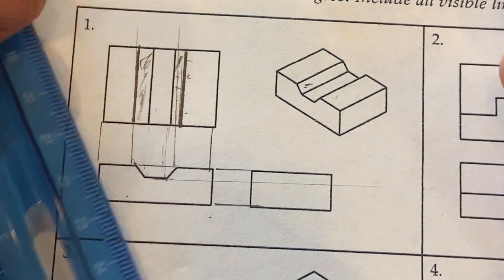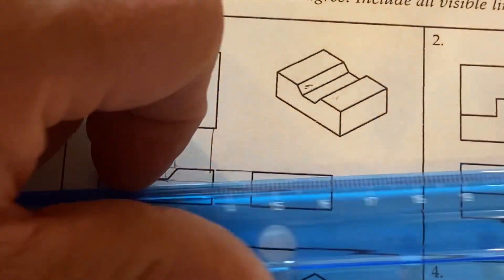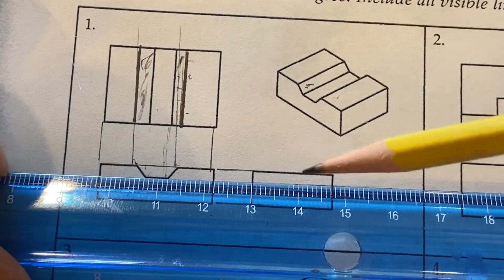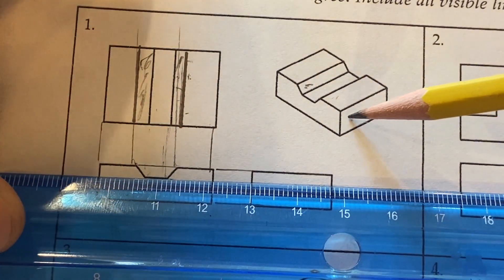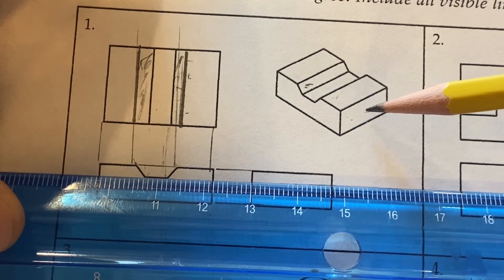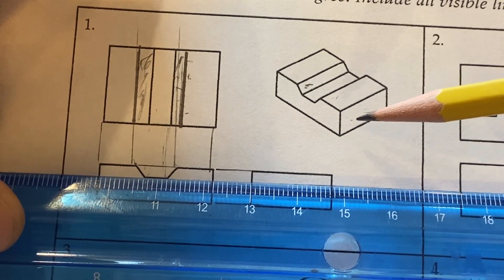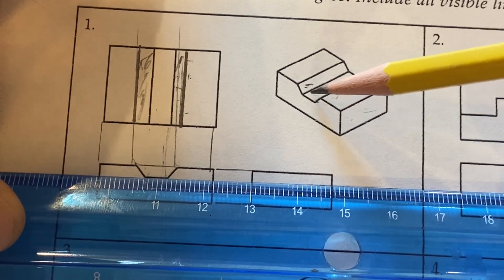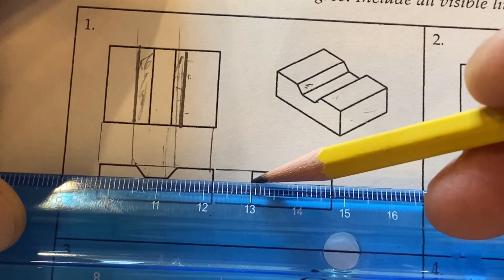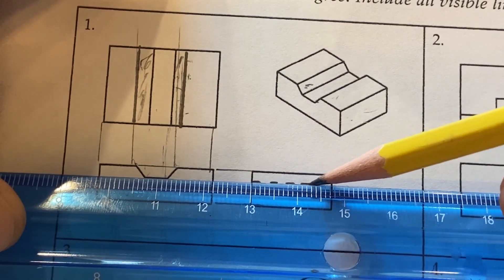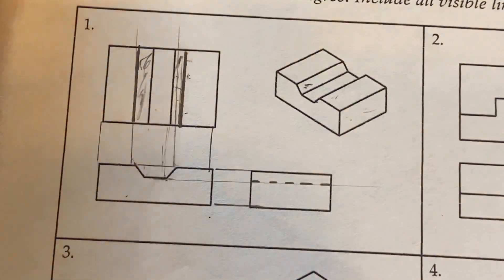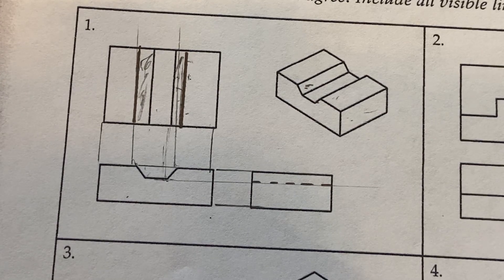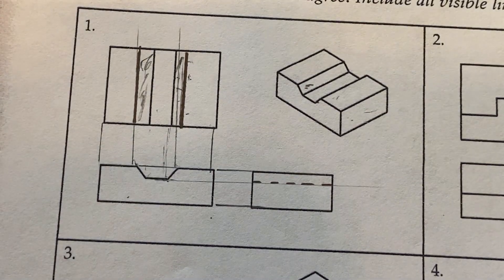And of course, down on our front view, this is just simply being projected over. And now since this is not shown, we don't see that when we're first looking here at our side view. It's back here behind that. So it's hidden. So this is going to be a hidden line right there. And that would be the way we answer number one on this particular problem.